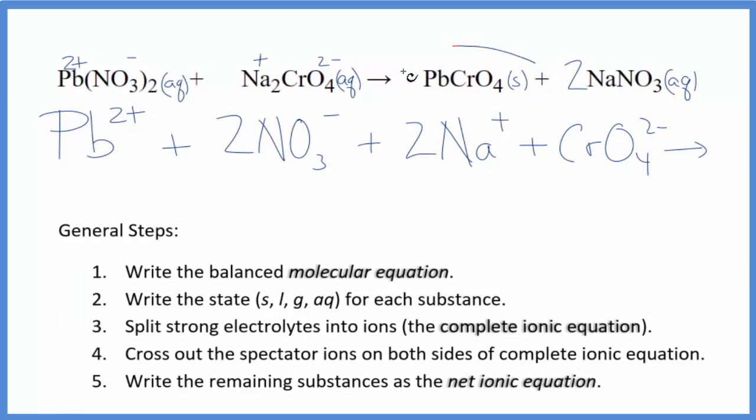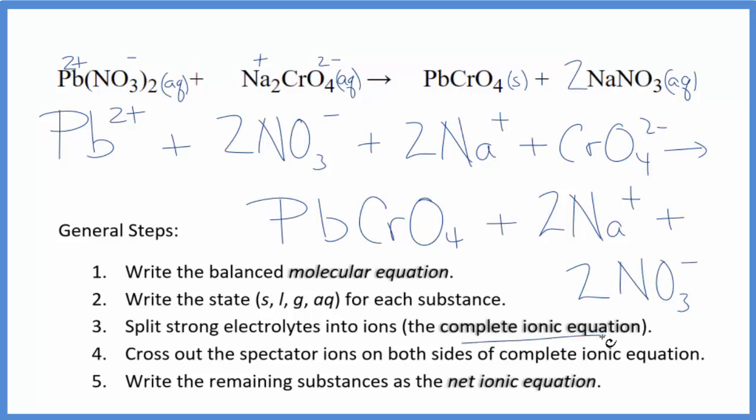For the products, we don't split solids apart. So the lead(II) chromate here is just going to be PbCrO4. For the sodium nitrate, we have a positive and a negative. So we'll have 2 sodium ions. And, put them down here, 2 nitrate ions. Just like the reactants. So this is the complete or total ionic equation.